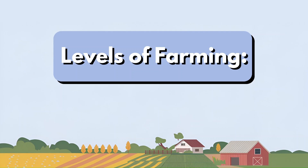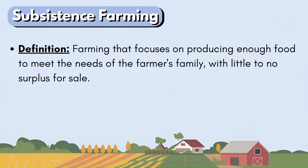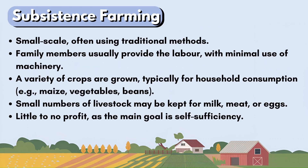There are four different levels of farming: subsistence farming, commercial farming, intensive farming and extensive farming. The first is subsistence farming — farming that focuses on producing enough food to meet the needs of the farmer's family with little to no surplus for sale. It is small-scale, often using traditional methods. Family members usually provide the labor with minimal use of machinery. A variety of crops such as maize, vegetables and beans are grown for household consumption, with small numbers of livestock kept for milk, meat or eggs. There is little to no profit as the main goal is self-sufficiency.